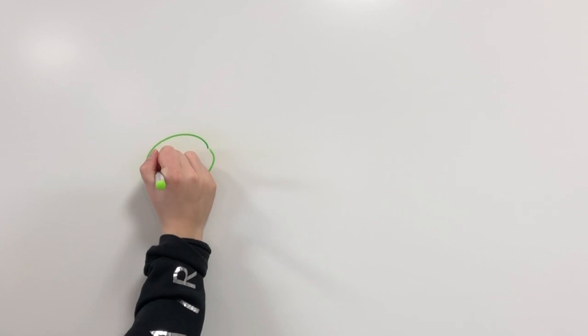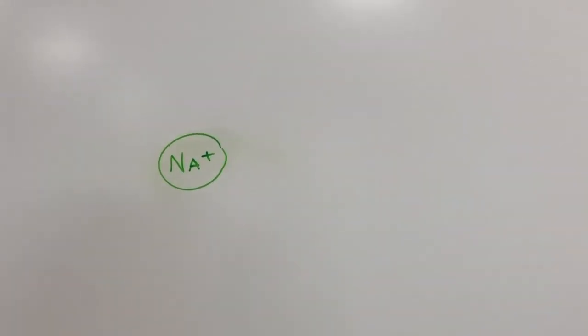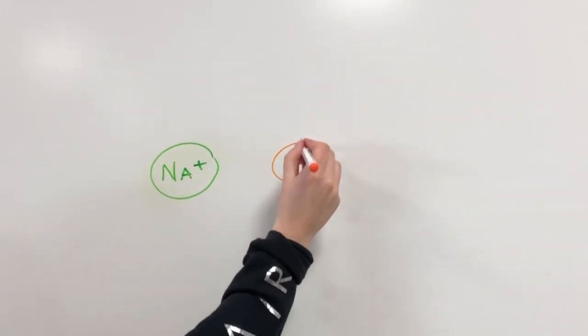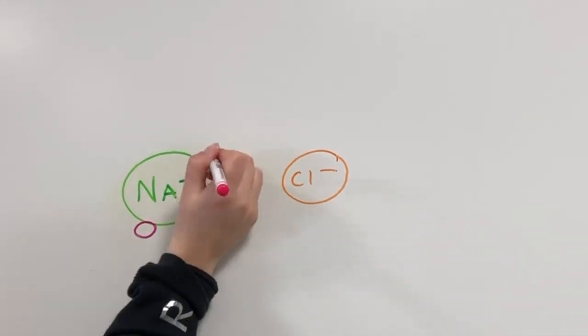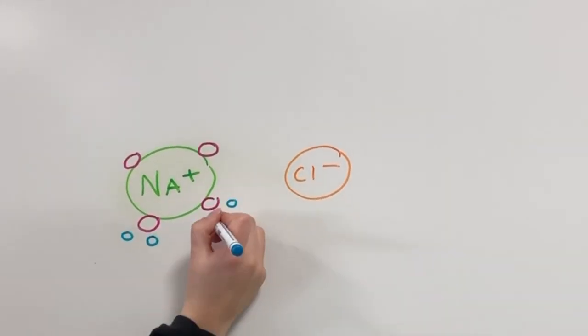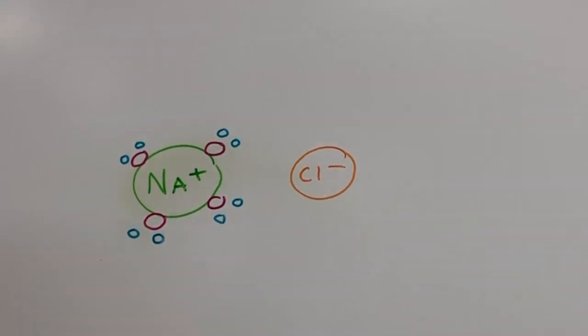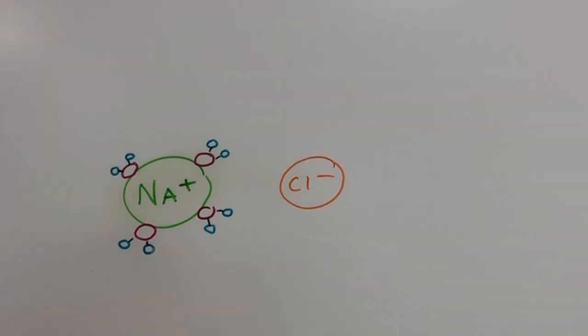So when an ionic compound comes in contact with water, let's say for example salt, which consists of a negative chlorine and a positive sodium, the oxygen molecule in water being slightly negative will attract to the positive ions, in this case the sodium, and the positive side of the water, the hydrogen, will attract to the negative ions, the chlorine.